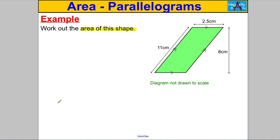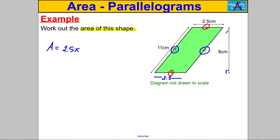Next question — pause the video and have a go. We're asked to work out the area of this shape. We're not told what type it is, but you can see the single arrows indicating one pair of parallel sides and the double arrows indicating a second pair, making it a parallelogram. The base is 2.5. Don't be confused — the 11 is the slanted height. We're given 8, which is outside the shape but is the perpendicular height. So the area is 2.5 × 8 = 20 centimeters squared. Be careful not to do 2.5 × 11.